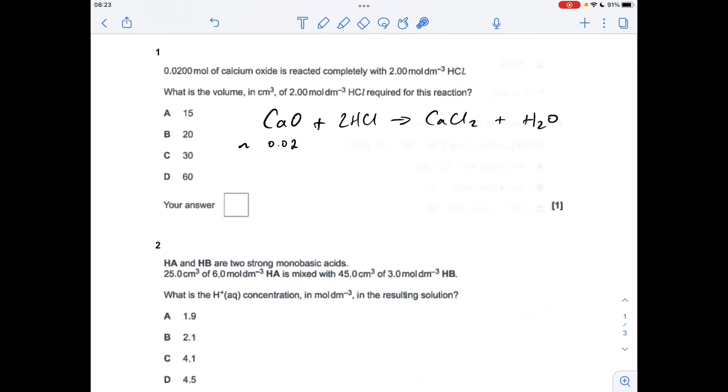Number one: we're told that 0.02 moles of calcium oxide is reacted completely with hydrochloric acid. What's the volume in cm³ of the HCl required? First thing we can say is the moles of HCl needed will be 0.04 from the mole ratio. Then using volume equals moles over concentration, 0.04 over 2, that's the concentration of the acid, multiply by 1000, gives you 20 centimeters cubed. So the answer was B.